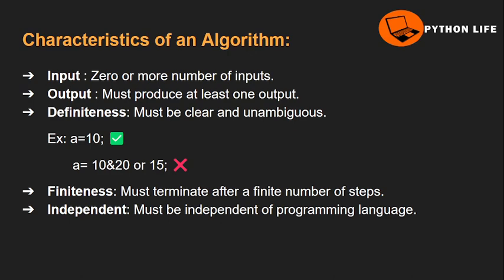Next, characteristics of algorithm. We use a set of 5 important characteristics. First is input — zero or more number of inputs. Next, output — must produce at least one output. Next, definiteness — the instructions must be clear and unambiguous. For example, a equals 10: in this statement, 'a' is a variable and the instruction is clear.